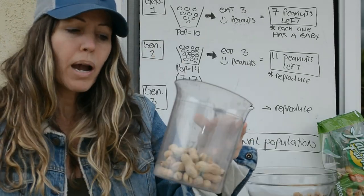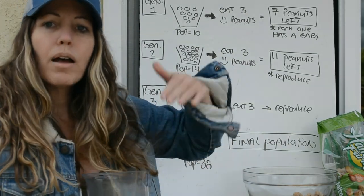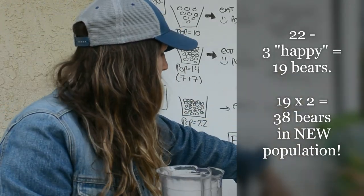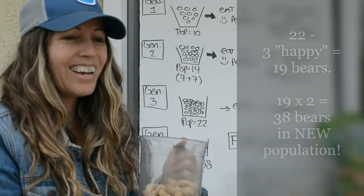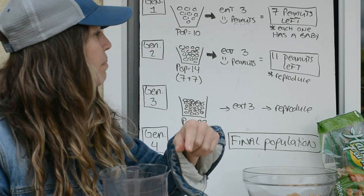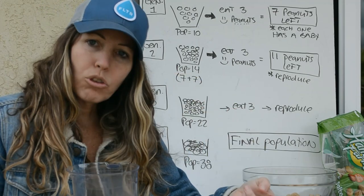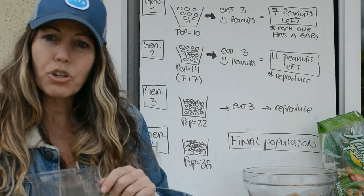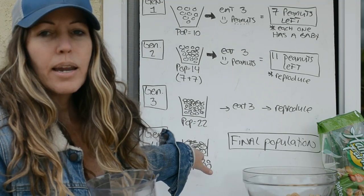After removing three from 22, the remaining population reproduces and you end up with a new total population of 38. So we started with 10 for generation 1, reproduced to 14 for generation 2, ate 3 and reproduced to get generation 3 with 22, ate 3 and reproduced to reach a population of 38 for generation 4.